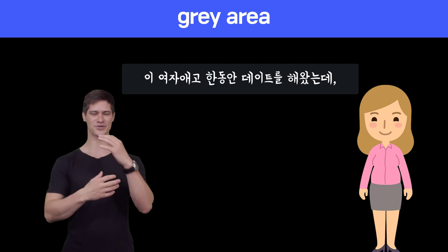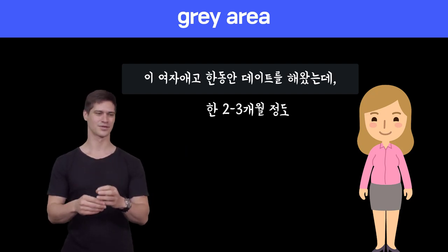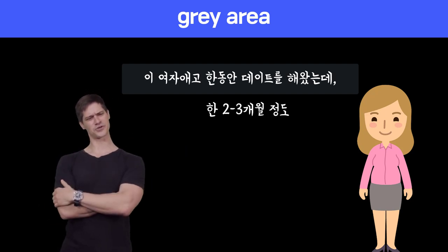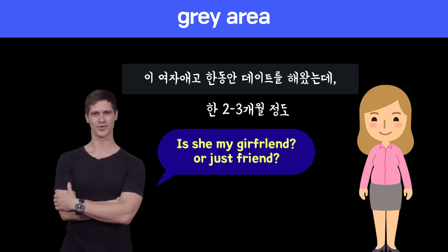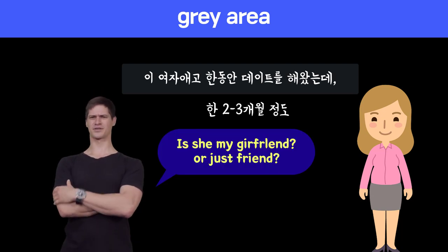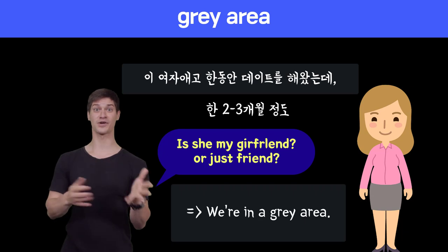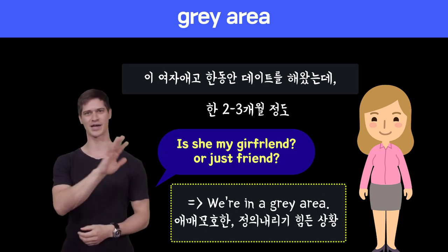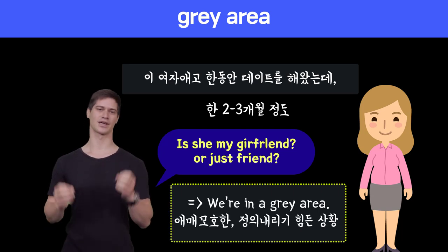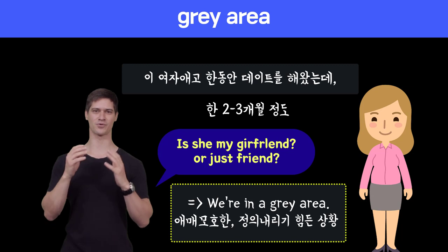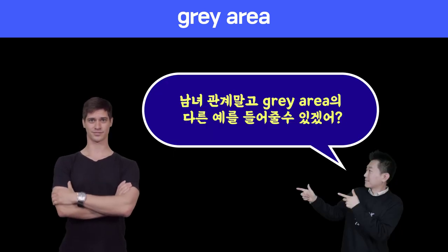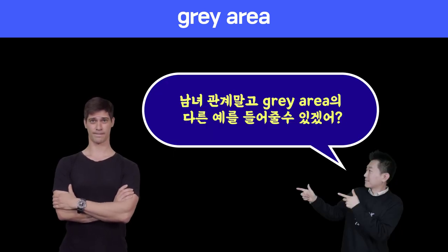I've been dating this girl for a while, a couple months, and I'm not really sure if she's my girlfriend or not, or if we're just friends. Are we friends? Are we girlfriend and boyfriend? I don't know, because we're in a gray area — an area of uncertainty, of ambiguity, and nobody knows exactly what it is. Can you think of any other example other than a relationship?